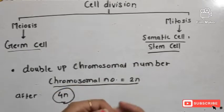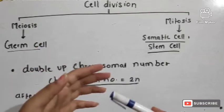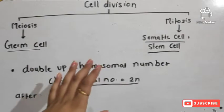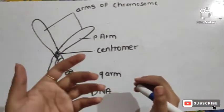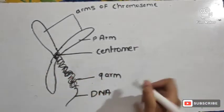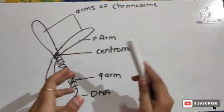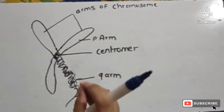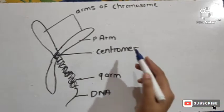The cell has various components such as the nucleus, chromosomes, and mitochondria. Chromosomes are the main component important for cell division. Chromosomes are generally only visible at the time of cell division, and they have a rod shape with a primary constriction called the centromere.